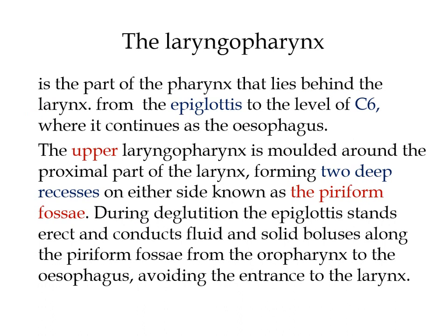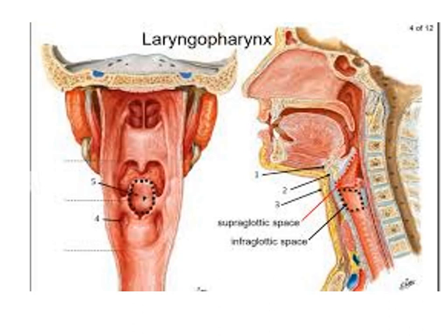The Laryngopharynx is the part of the pharynx lying behind the larynx, from the epiglottis to C6. The upper laryngopharynx is molded around the proximal part of the larynx, forming two deep recesses called the pyriform fossae. During swallowing, the epiglottis changes position from open to closed to prevent food from passing into the respiratory tract instead of going into the GI tract.